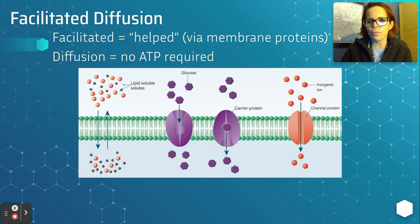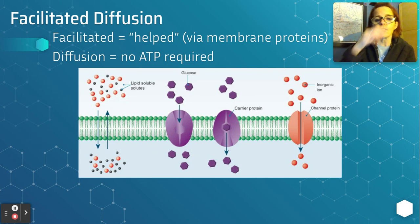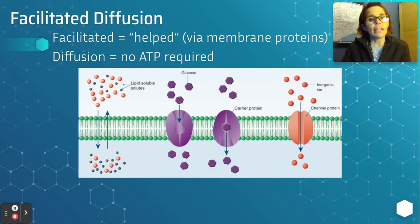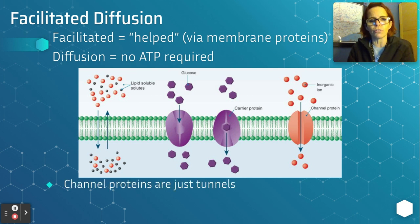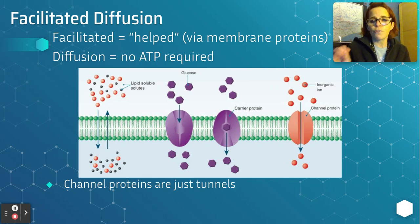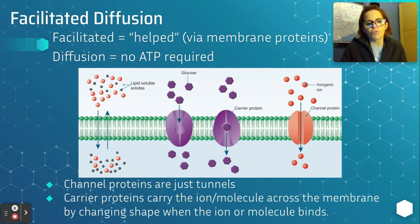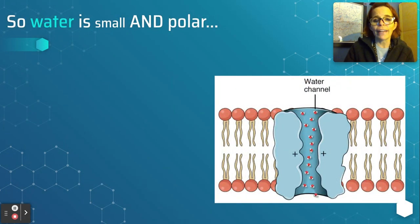Facilitated means helped — anytime you're facilitating something, you're helping out. Facilitated diffusion is just helping diffusion to occur. No ATP is required and we're moving from areas of high concentration to areas of low concentration. Facilitated diffusion is another way of saying diffusion is happening through a membrane protein. Channel proteins are just tunnels; carrier proteins carry the ion or molecule across the membrane by changing shape.